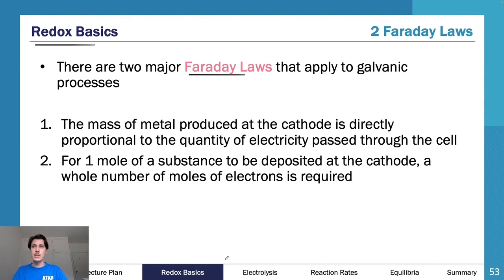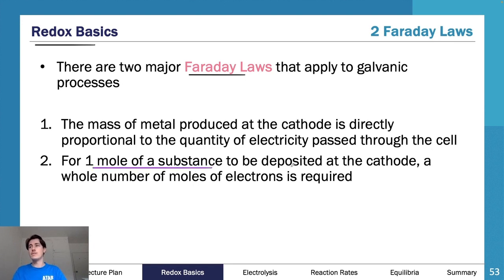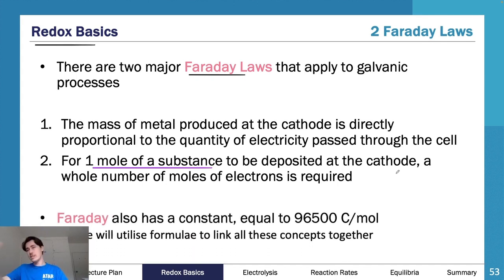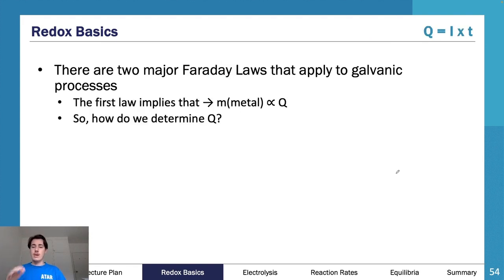The first Faraday's law is that the mass of the metal produced at the cathode is directly proportional to the quantity of electricity passed through the cell. If you pass more electricity through, you get more metal produced. For one mole of substance to be deposited at the cathode, a whole number of moles of electrons is required. This is where our 96,500 constant comes from — Faraday's constant is equal to 96,500 coulombs per mole.